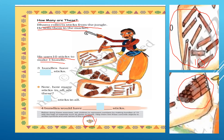He has made one, two, three bundles of sticks. Three bundles have how many sticks? As there are 10 sticks in one bundle, there are 10 plus 10 is 20, plus 10 is 30 sticks. So, there are 30 sticks in three bundles.